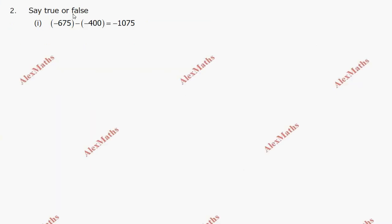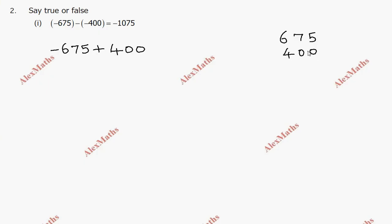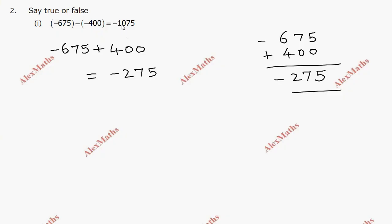Question number 2: say true or false. Left hand side is minus 675. Minus and minus gives plus side, so plus 400. Random opposite sign, peri number subtraction for no peri number sign. So 5 minus 0 is 5, 7 minus 0 is 7, 6 minus 4 is 2. Peri number sign on the minus, we got answer minus 275, but here we got minus thousands, so it does not match.